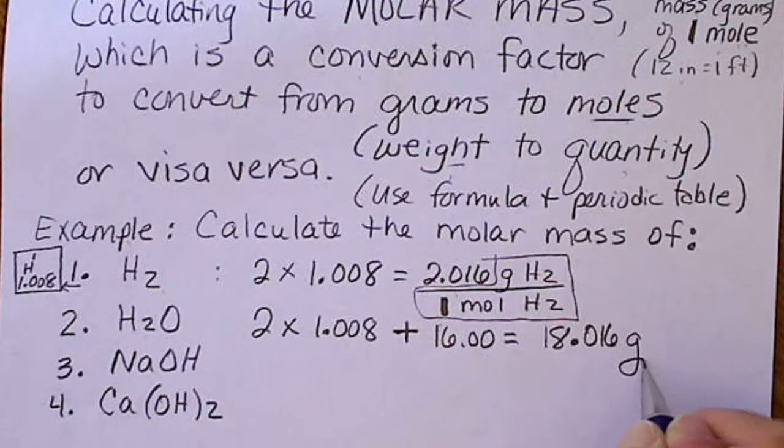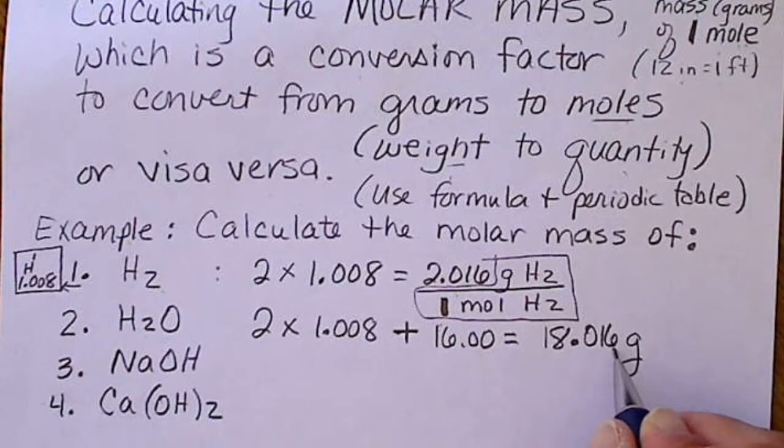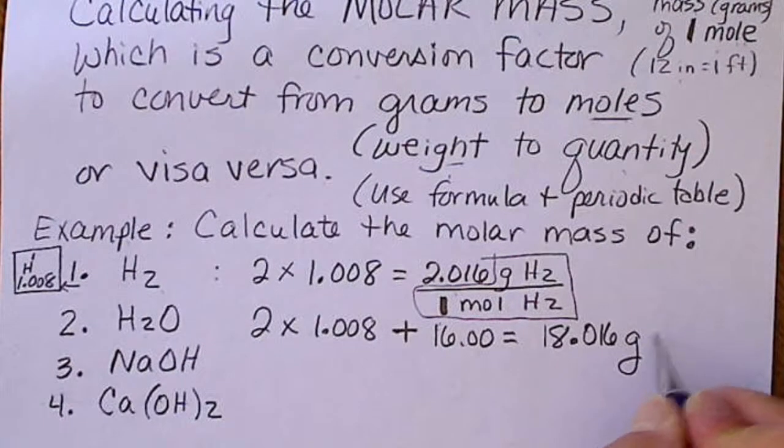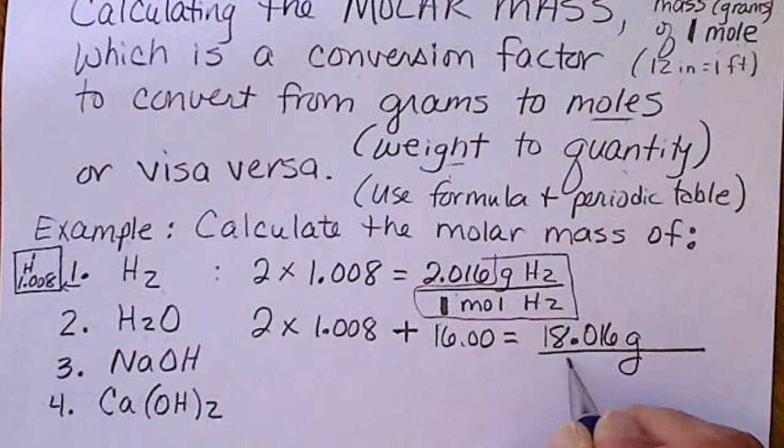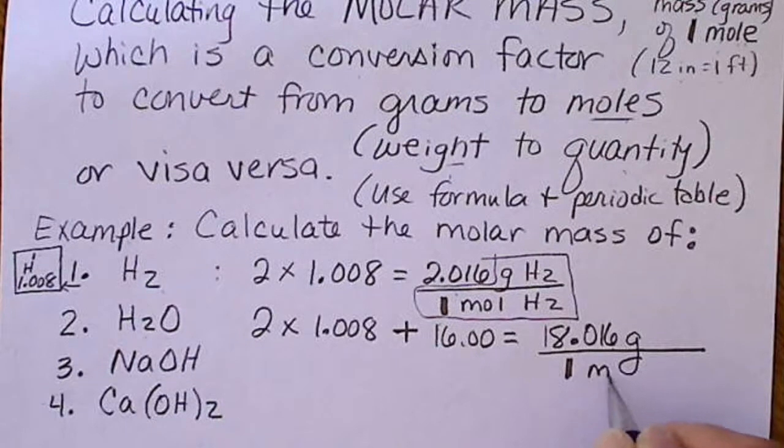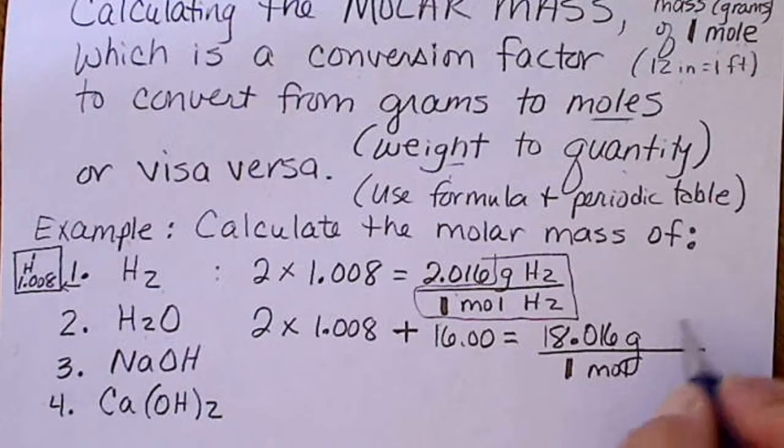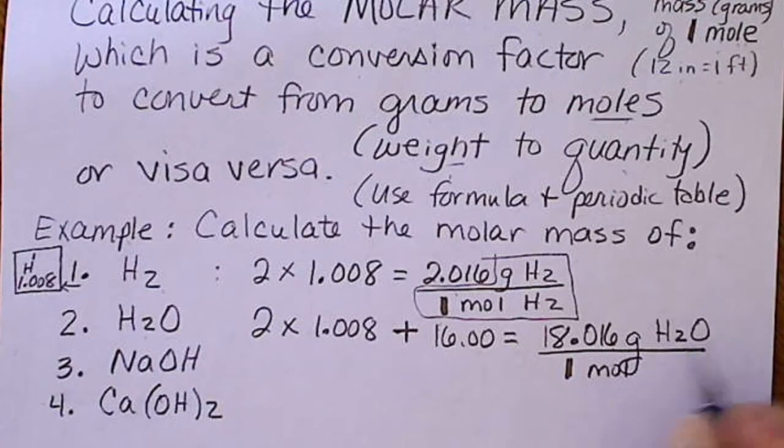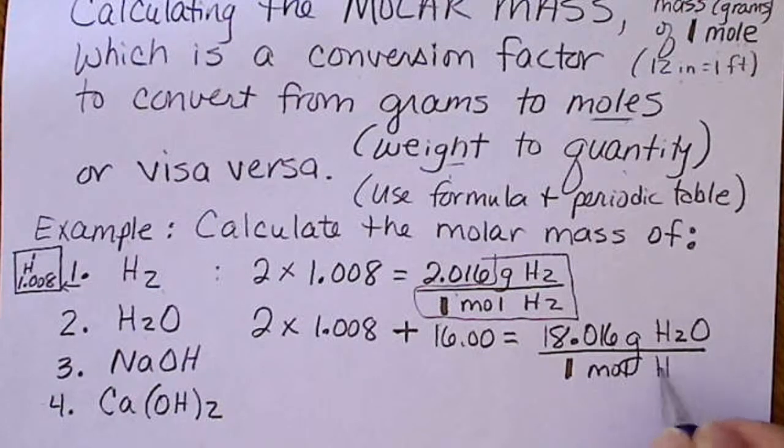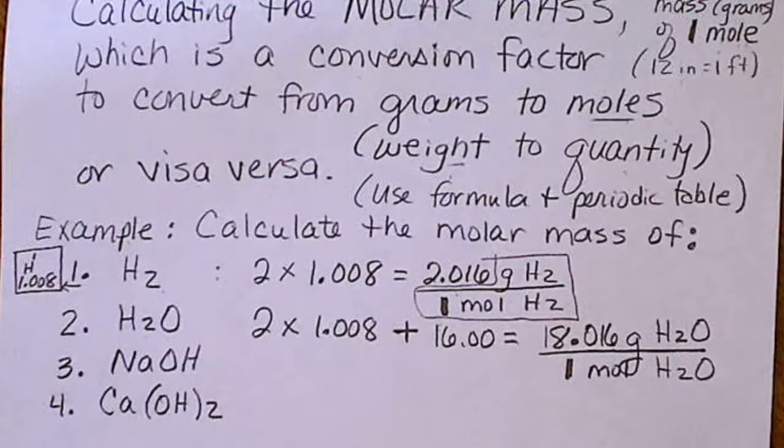This will be grams. The number that we calculate is grams, and we want to put per 1 mole. It's also very helpful to put the formula there, grams of H2O per 1 mole of H2O.